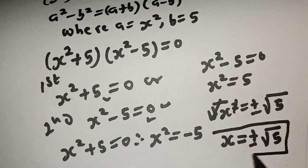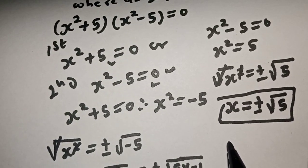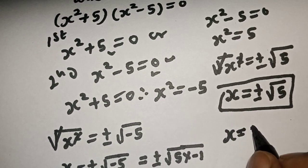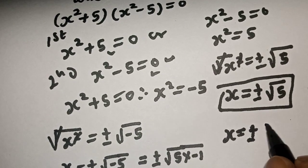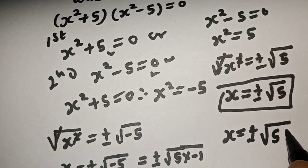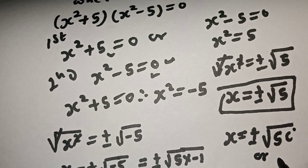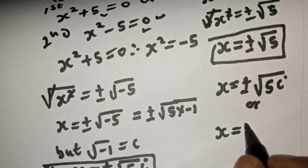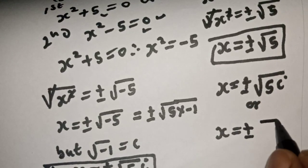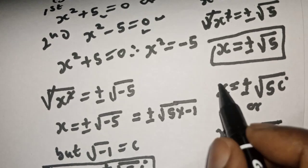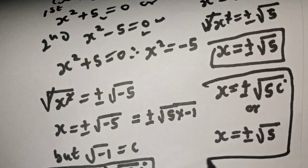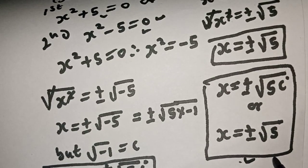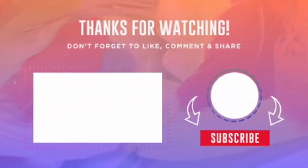This is the second value of s. Therefore, our final answer is s is equal to plus or minus square root of 5. These are the values of s. If you enjoyed the class, please don't forget to like, share, comment and subscribe. Thank you.